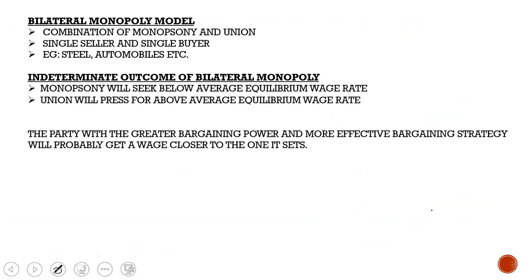A bilateral monopoly model is a combination of a union and a monopsony — a single seller and a single buyer. A union represents a monopolistic seller of labor; they control the supply and influence wage rates. The buyer is a monopsonistic buyer who affects wages by changing employment. An example is the steel and automobiles industries.